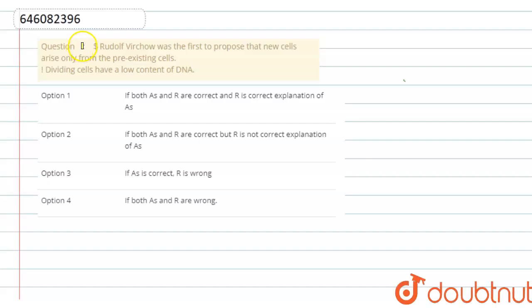The question is about assertion and reason. The assertion is, Rudolf Witscher was the first to propose that new cells arise only from pre-existing cells. And the reason which is given here is dividing cells have a low content of DNA.